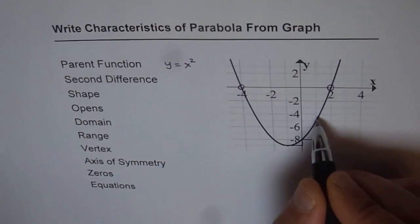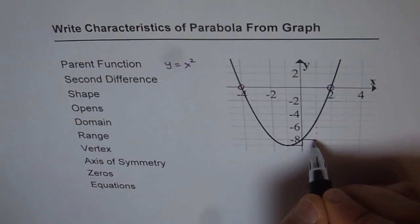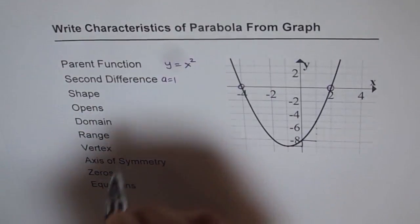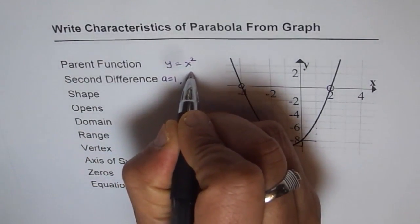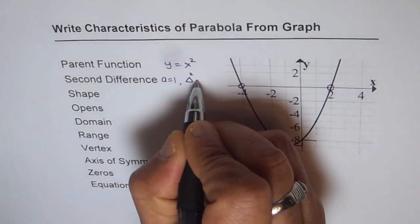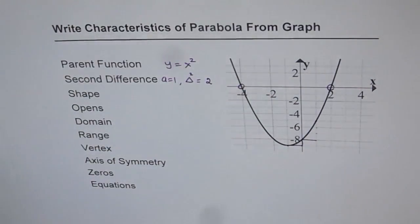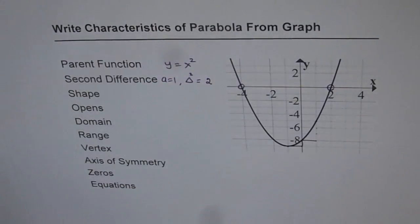Now, since the steps are the same, a value for this function is 1. Now, a equals 1, so second difference will be how much? Second difference, which I am writing as delta 2, is 2 times a. So in this case, it will be 2. So that is how you can get second difference.